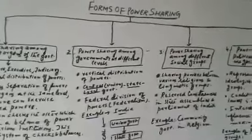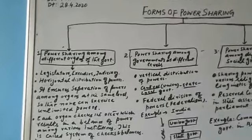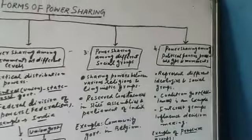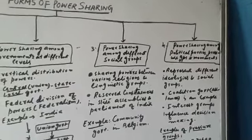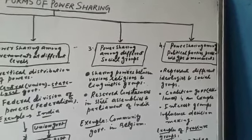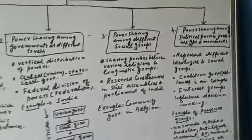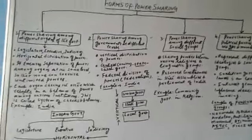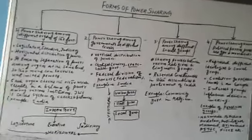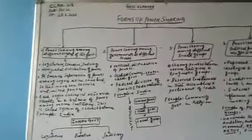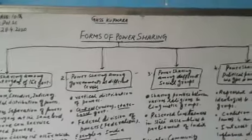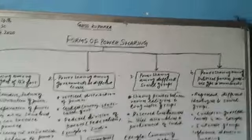So dear students, we discussed the different forms of power sharing: among different organs, different levels, social groups, political parties, pressure groups, and various movements. With this, we end the first chapter of political science on power sharing. In the next video, we will discuss the second chapter, which is called federalism. Thank you.